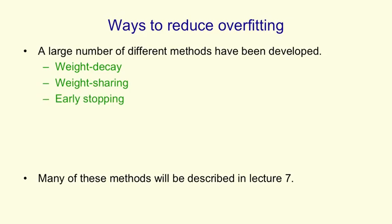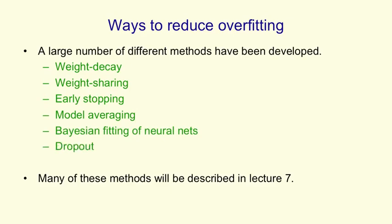There's early stopping, where you make yourself a fake test set, and as you're training the net, you peek at what's happening on this fake test set. And once the performance on the fake test set starts getting worse, you stop training. There's model averaging, where you train lots of different neural nets and you average them together in the hopes that that will reduce the errors you're making. There's Bayesian fitting of neural nets, which is really just a fancy form of model averaging. There's dropout, where you try and make your model more robust by randomly omitting hidden units when you're training it. And there's generative pre-training, which is somewhat more complicated and I'll describe towards the end of the course.